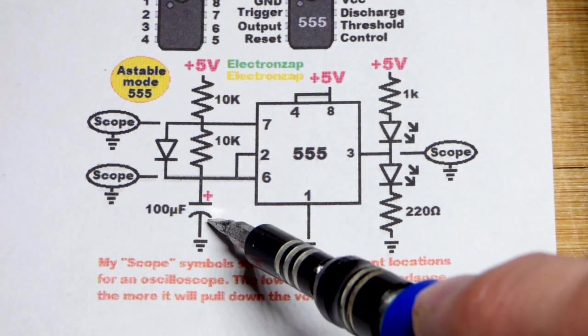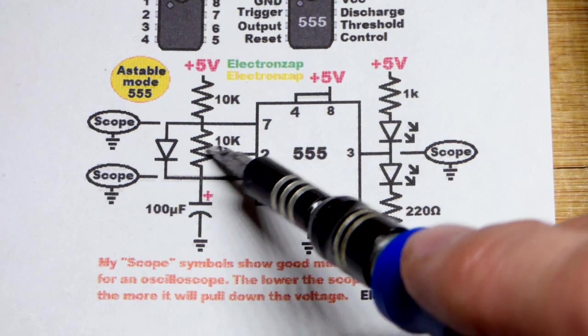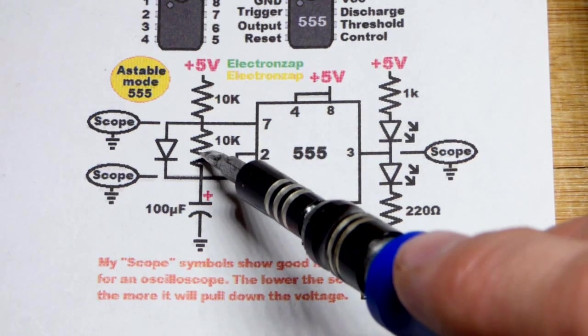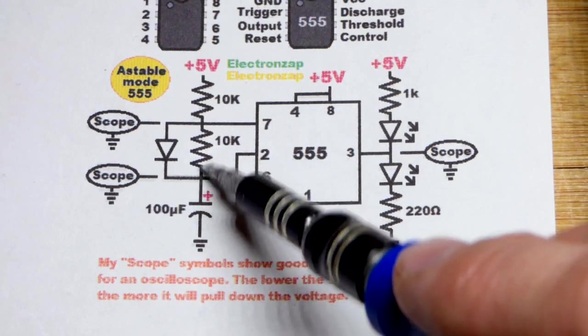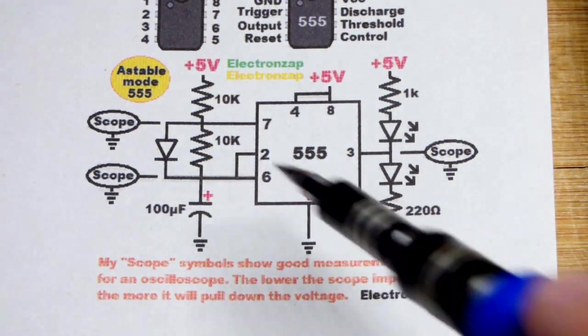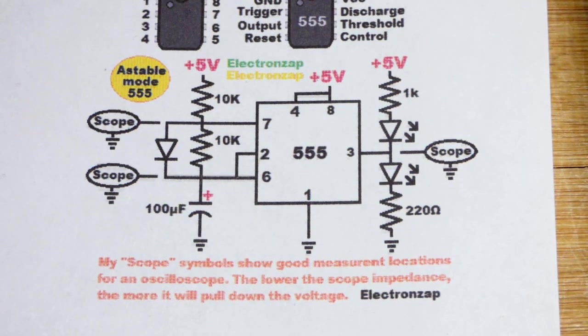The value of the capacitor, the larger it is, the more charge it will have. And the value of the resistors, the more resistance they have, the longer it takes current to flow through them. You will have a longer period of time. Lower values will go quicker, and you can balance them out to get whatever time you want.